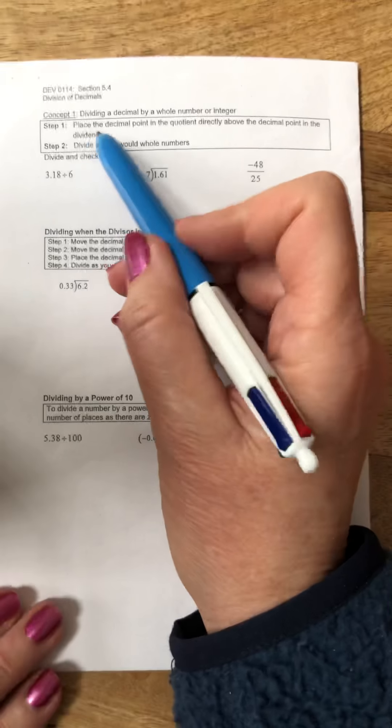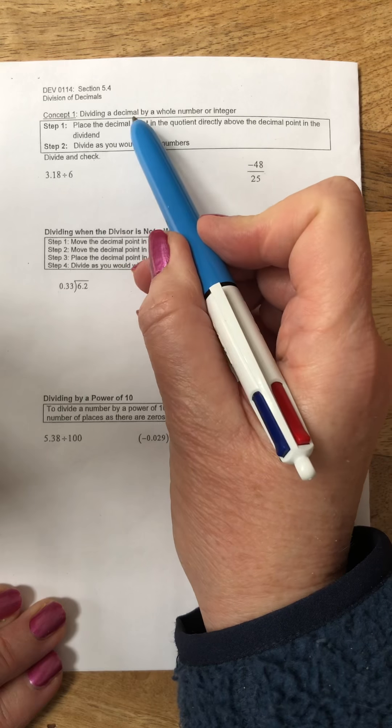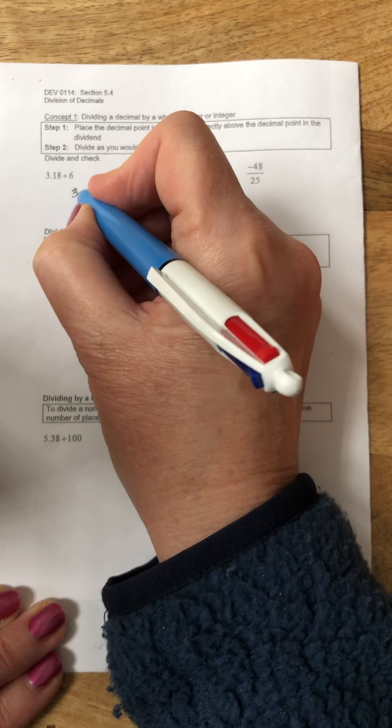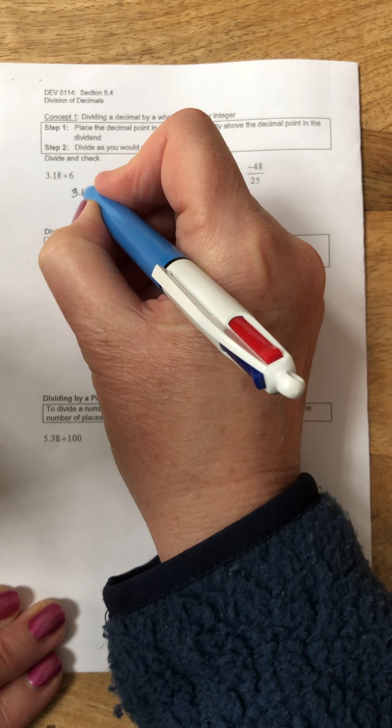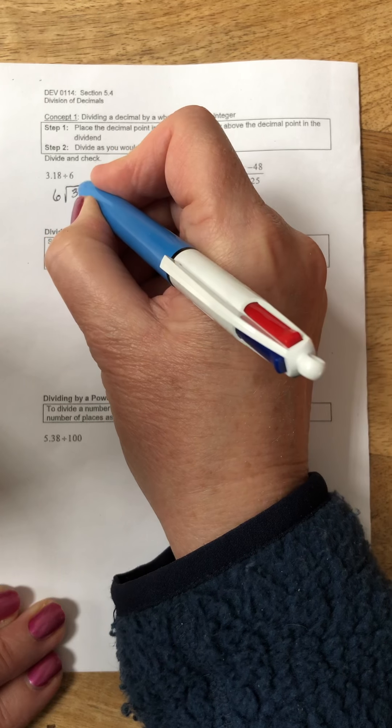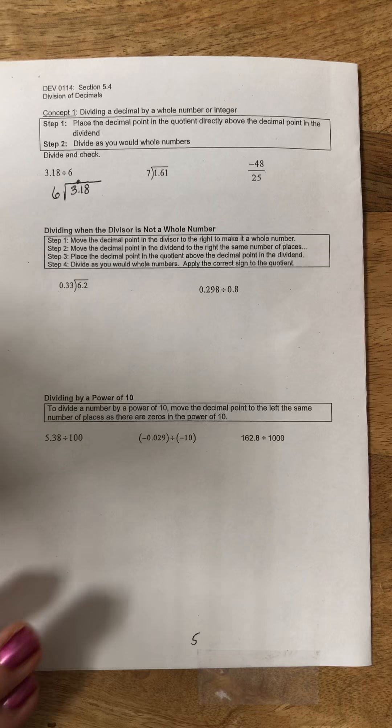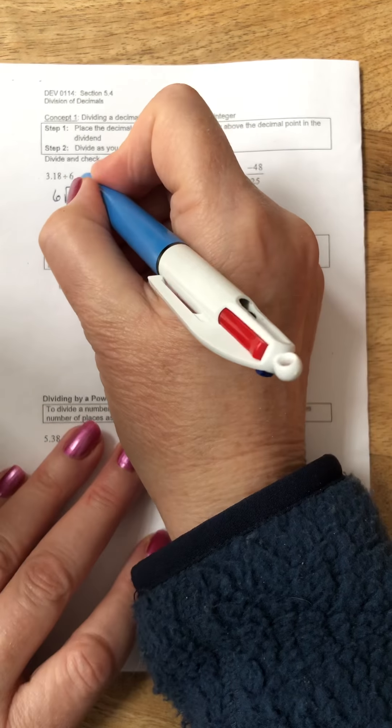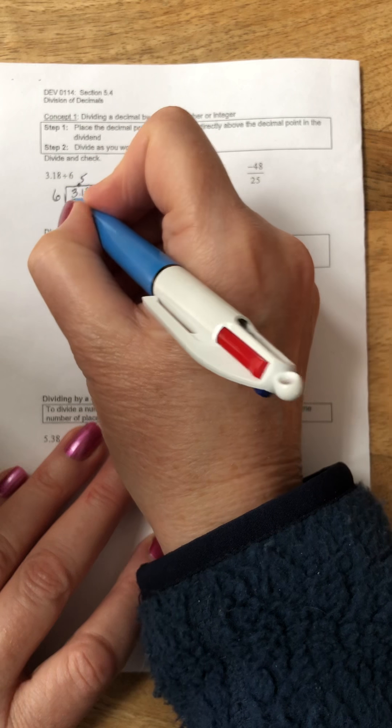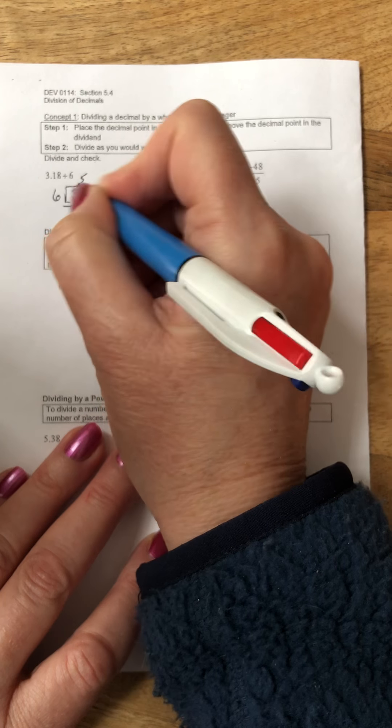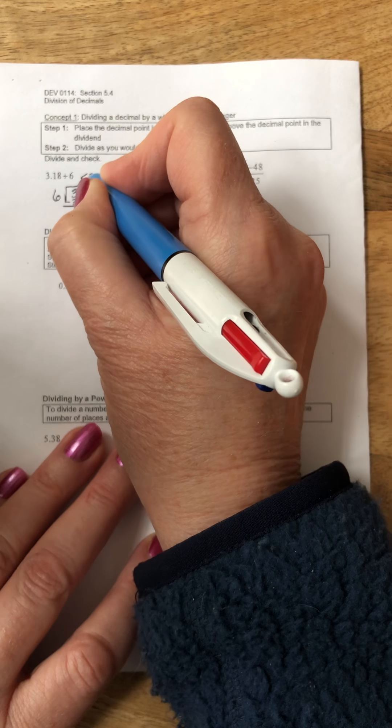In this first section we're dividing a decimal by a whole number or an integer, so I have 3.18 divided by 6. We're just going to move the decimal point up onto the quotient line and divide as we would ordinarily.